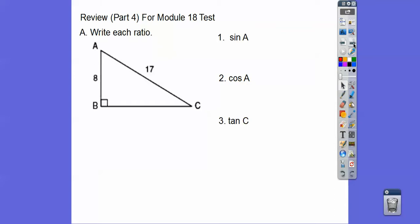So write each ratio. Well first thing we've got to do is figure out this third side right here. So 8 squared plus x squared equals 17 squared. We'll recognize that's an 8, 15, 17 right triangle. It's a Pythagorean triple.